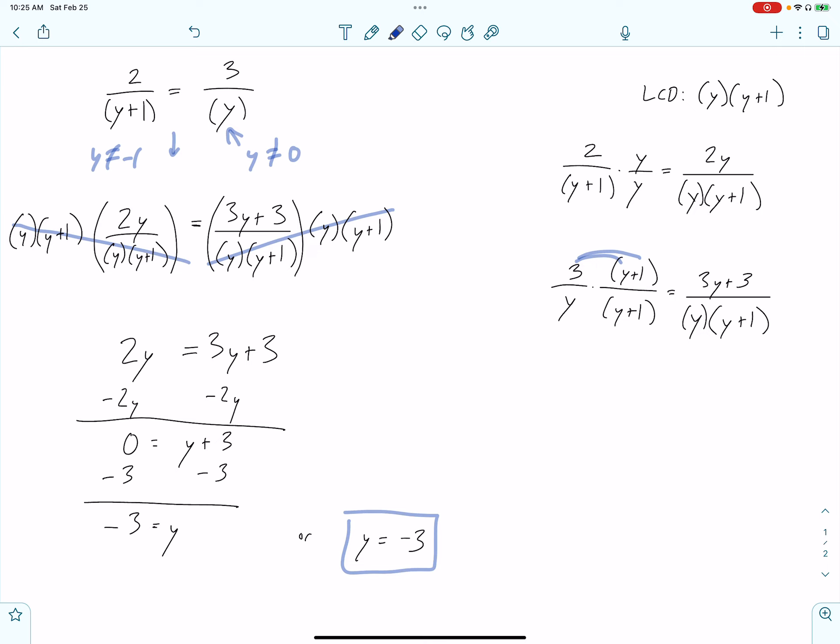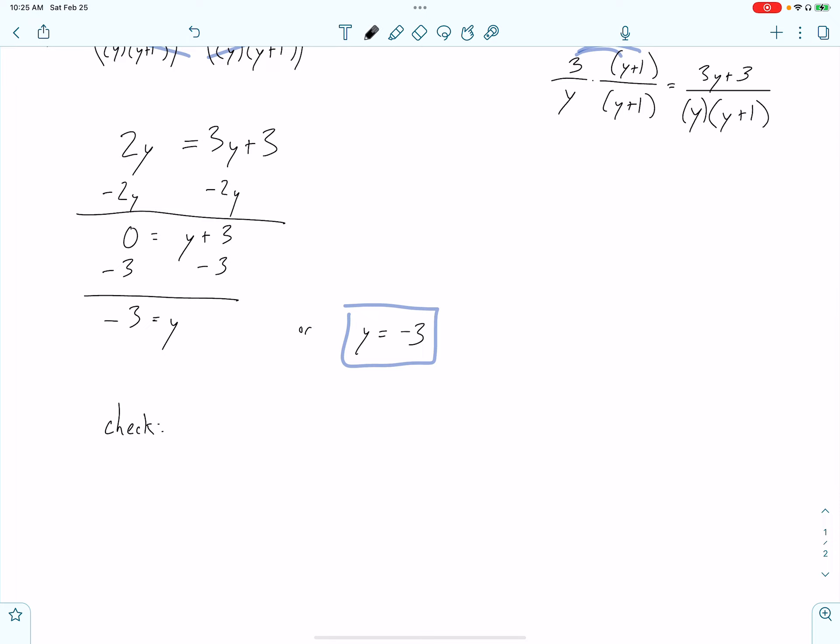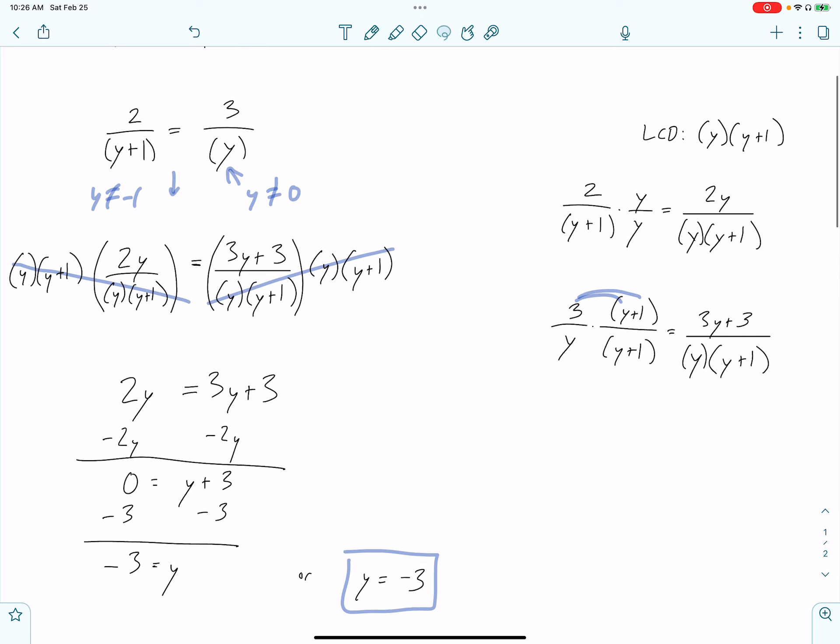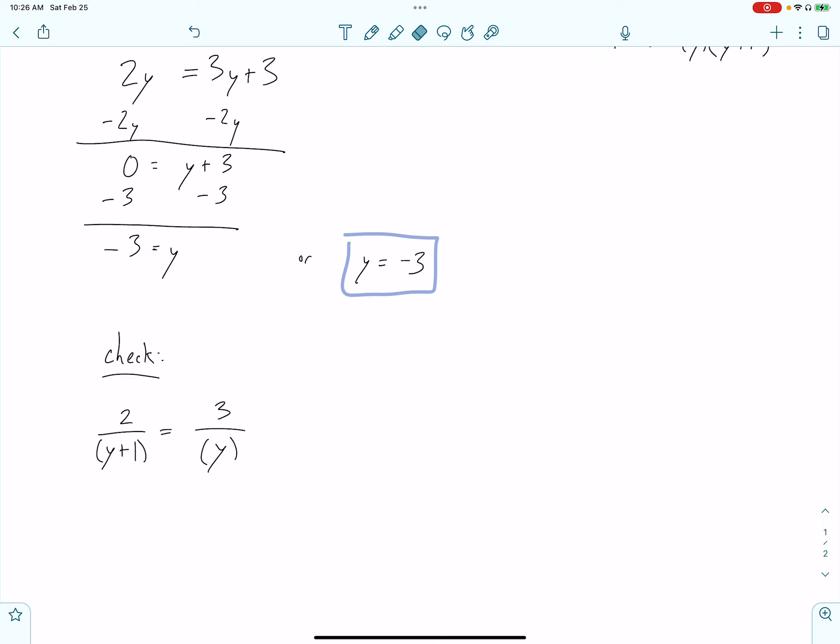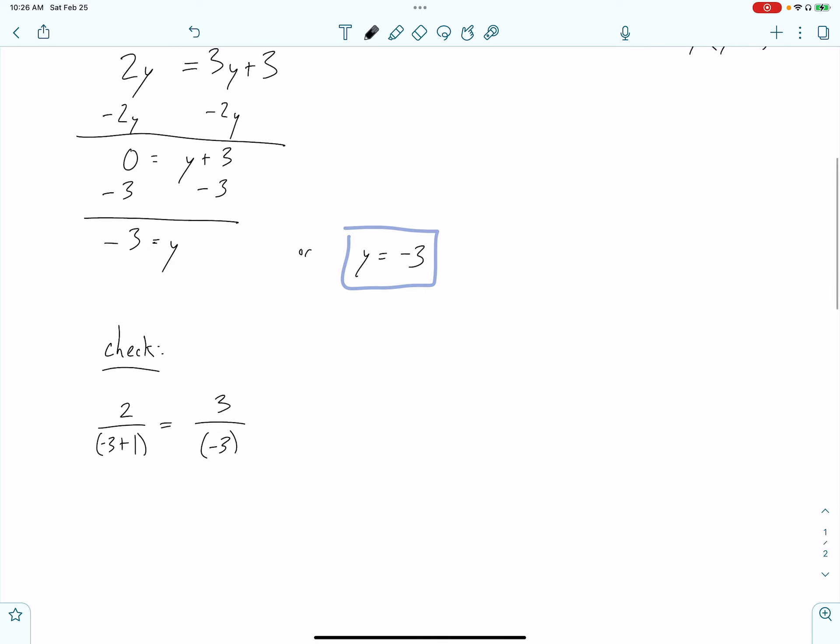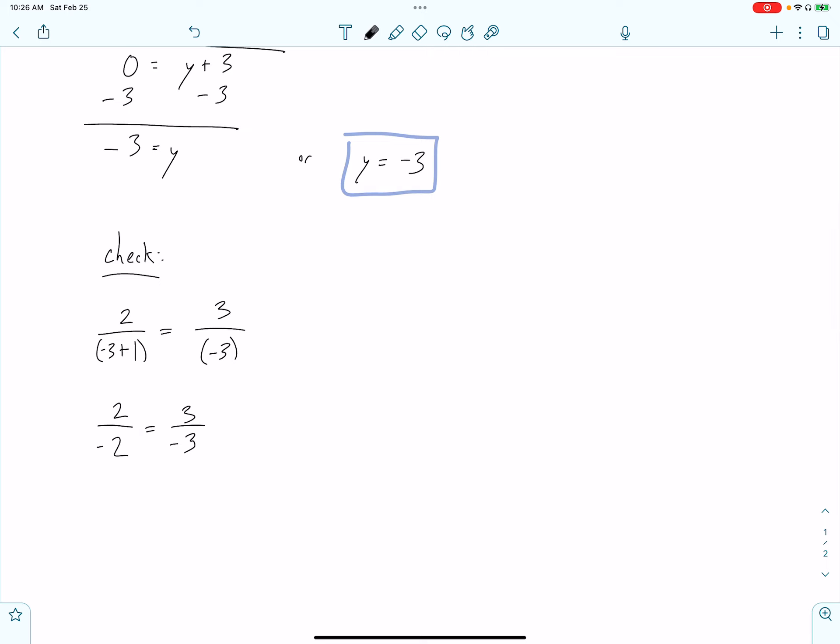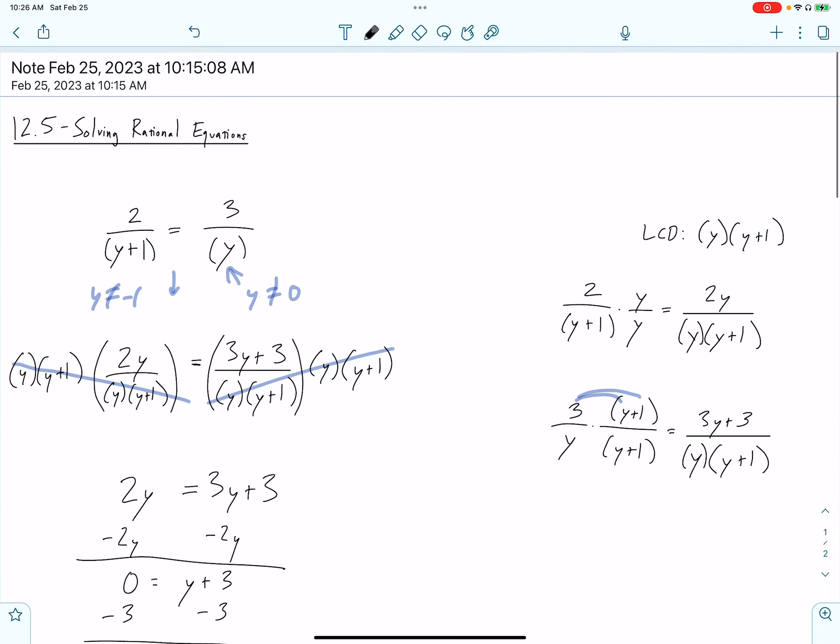The only other thing I want to do is check it. Check our solution. It means to take the original equation and replace our y's with negative 3's. Let's see if it makes a true statement. 2 over negative 3 plus 1 equals 3 over negative 3. Well, negative 3 plus 1 is negative 2. So, is 2 over negative 2 equal to 3 over negative 3? Both sides are equal to negative 1. The check here is good. That's just verifying that our number was good. And that is essentially the method of solving rational equations in this way.